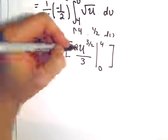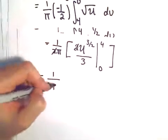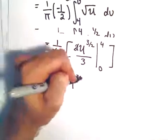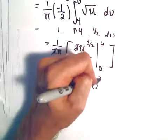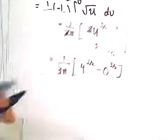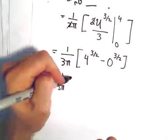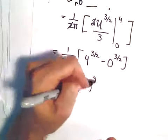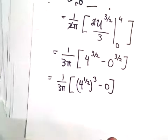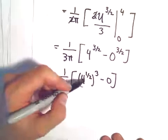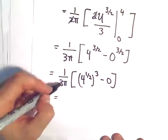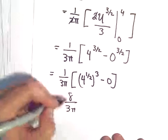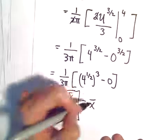Alright, so let's see. I guess we could cancel out the 2s. We would have 1 over 3 pi. If I pull the 3 out front, then we would be left with 4 to the 3 halves power, minus 0 to the 3 halves power. Well, we could write this as 4 to the 1 half cubed. The lower limit is certainly just 0. Well, 4 to the 1 half is 2, so 2 cubed is 8. So we'll have 1 over 3 pi times 8, or we'll get 8 over 3 pi as the value for x bar.